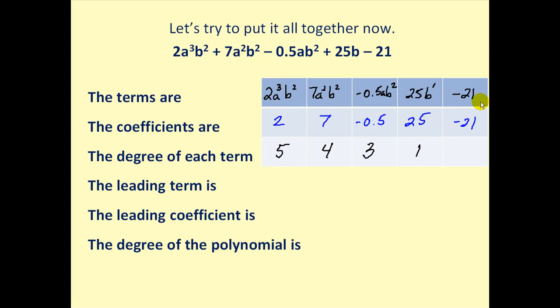This has one factor of b. This has zero variable factors, so it's degree zero.